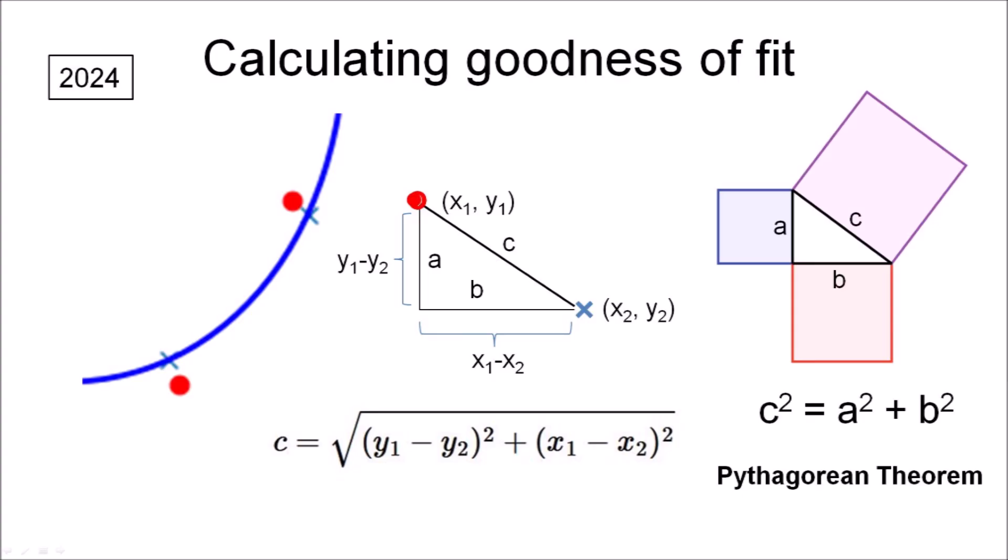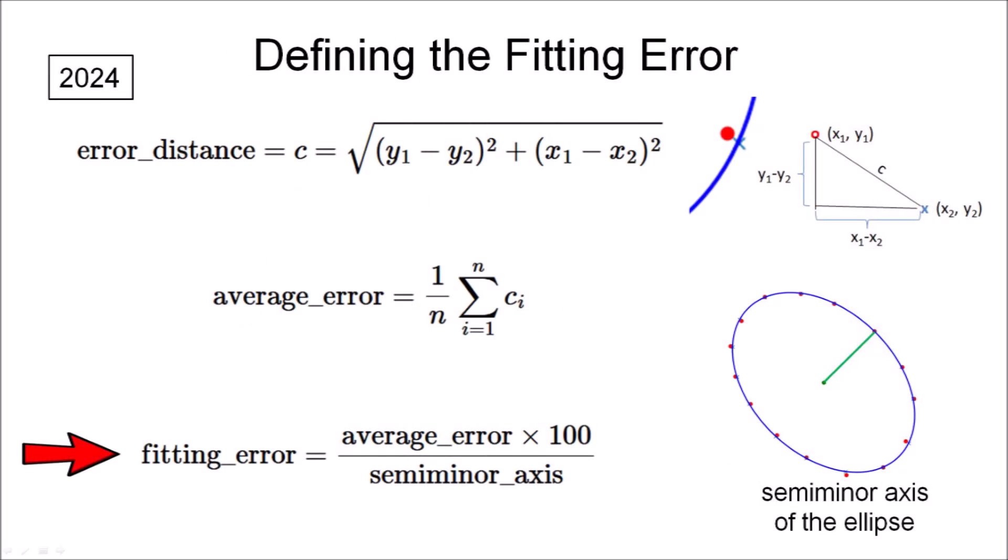In 2024, I modified the ellipse fitting program to calculate the goodness of fit. The Pythagorean theorem allows us to calculate the error distance, which is the distance between the point that we plotted and the path of the ellipse. Standard measures of fitness, like the mean squared error, do not provide meaningful comparisons for ellipses of different sizes. The error measure needs to be independent of the number of sample points and the size of the ellipse. We calculate the sum of all the error distances between the observed points and the points on the ellipse and divide by the number of points to get the average error. Then we calculate the fitting error as the percentage of the average error relative to the semi-minor axis of the ellipse, which is half of the width of the ellipse. This process scales the average error to the size of the ellipse to allow comparisons of the errors for ellipses of different sizes.